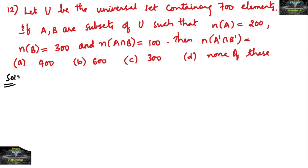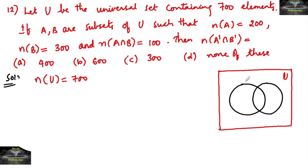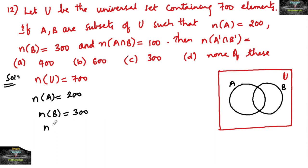Here, if I consider the universal set as mu, total 700 elements are there, that is n(mu) = 700. A and B are subsets of the universal set such that n(A) = 200, n(B) = 300, and n(A ∩ B) = 100. So the intersection part: n(A ∩ B) = 100.